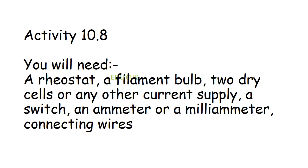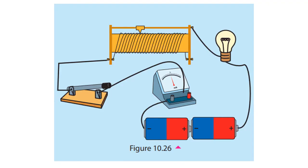For the rheostat activity, you will need a rheostat, a filament bulb, two dry cells, a switch, and an ammeter or milliammeter. Connect the bulb, rheostat, switch, milliammeter, and the cells to construct the circuit. Close the switch — the bulb lights and the milliammeter shows a reading relevant to the current flow. Then shift the slider of the rheostat to and fro. You can observe the change in brightness of the bulb and the milliammeter reading. According to this activity, it is clear that the current flowing through the circuit can be changed to our requirement using a rheostat.